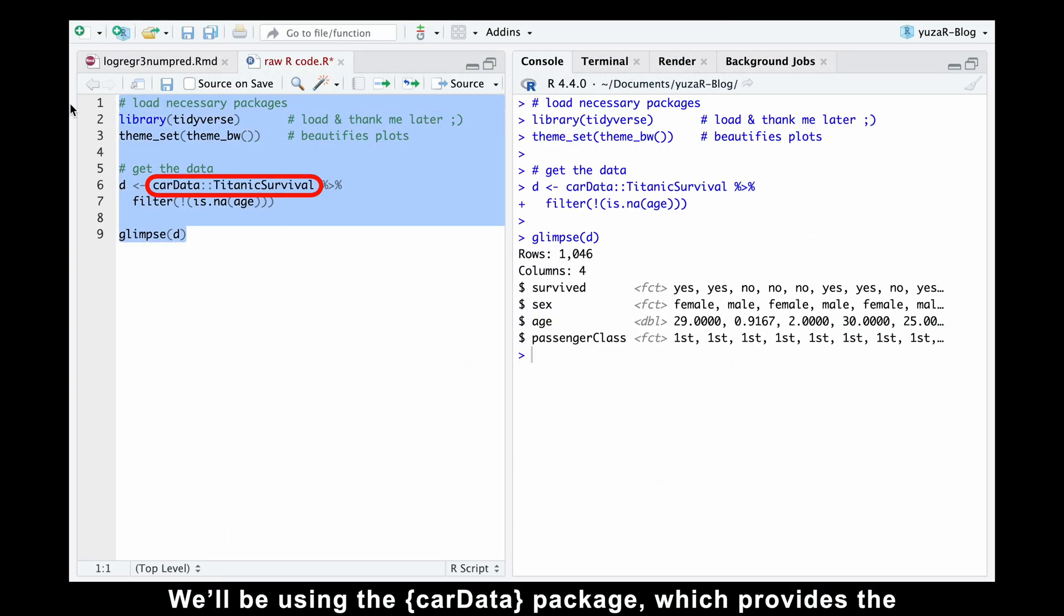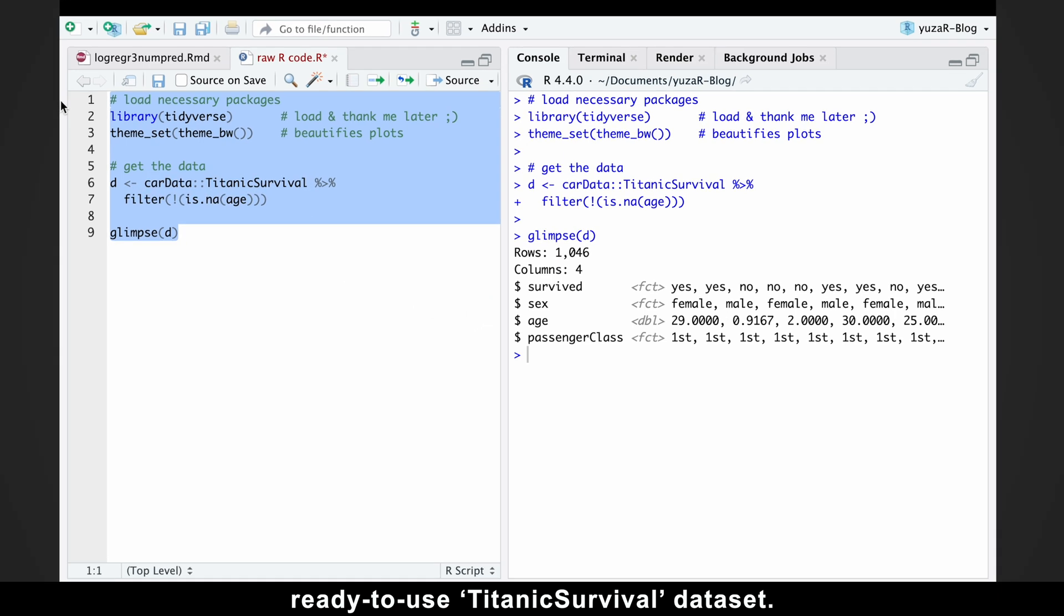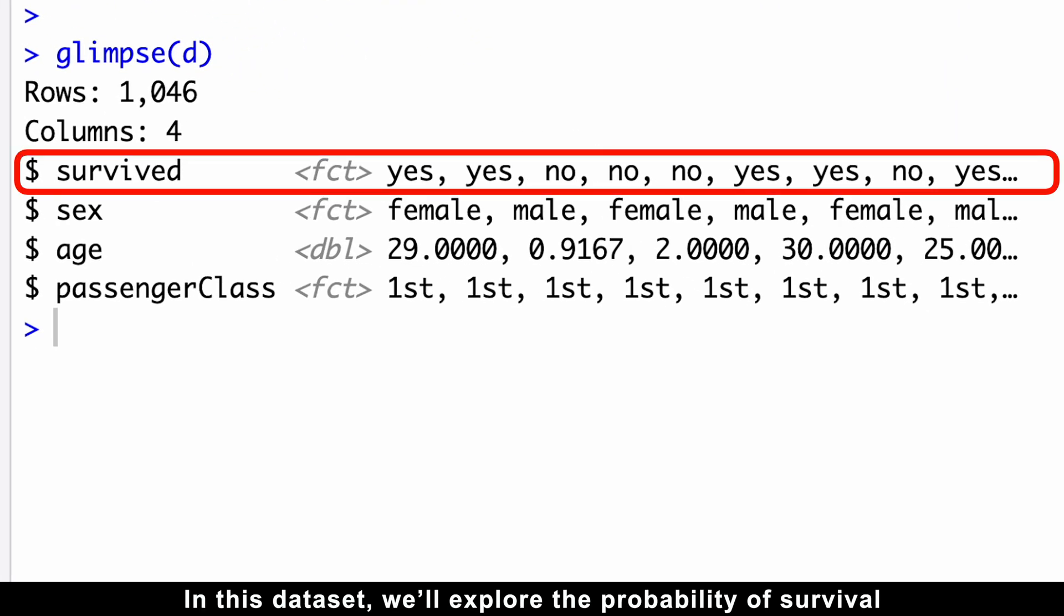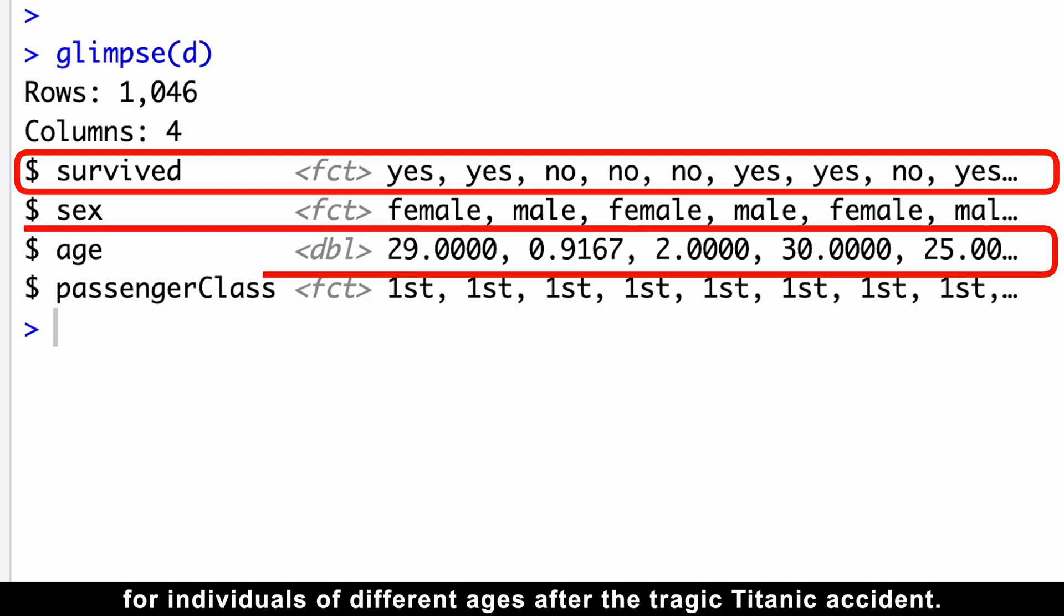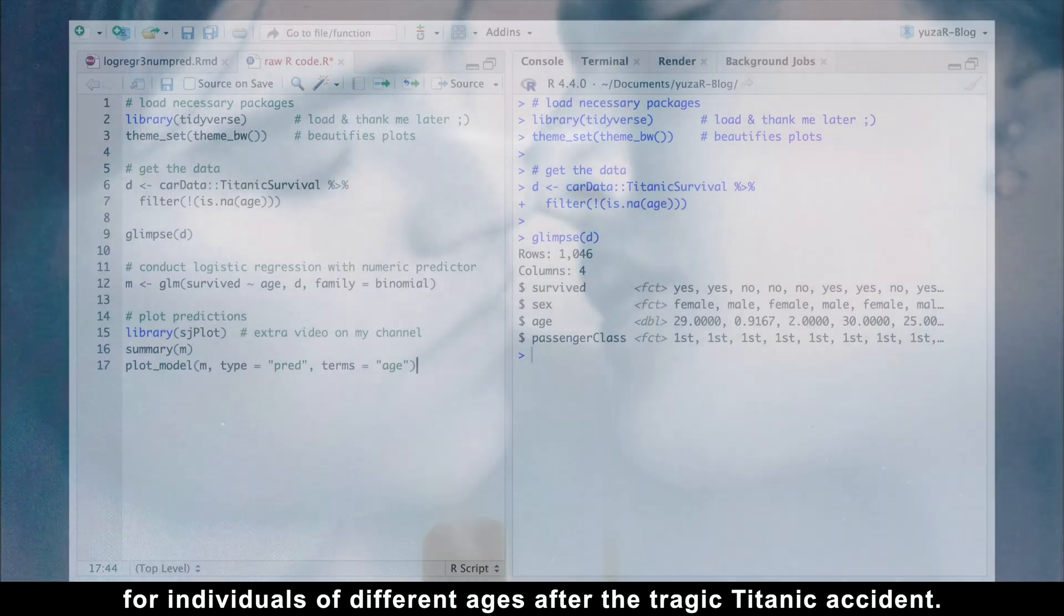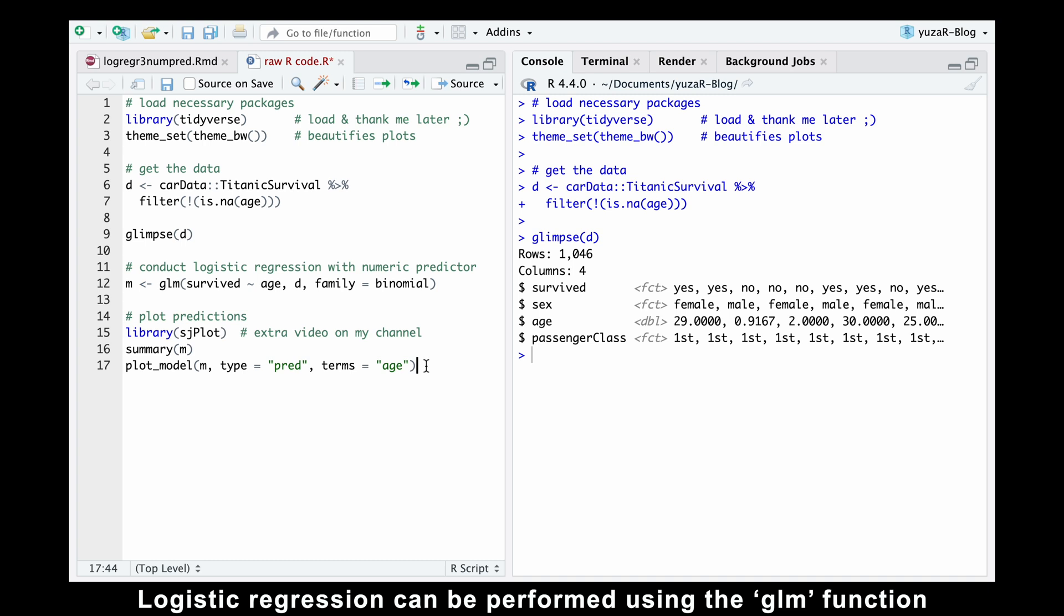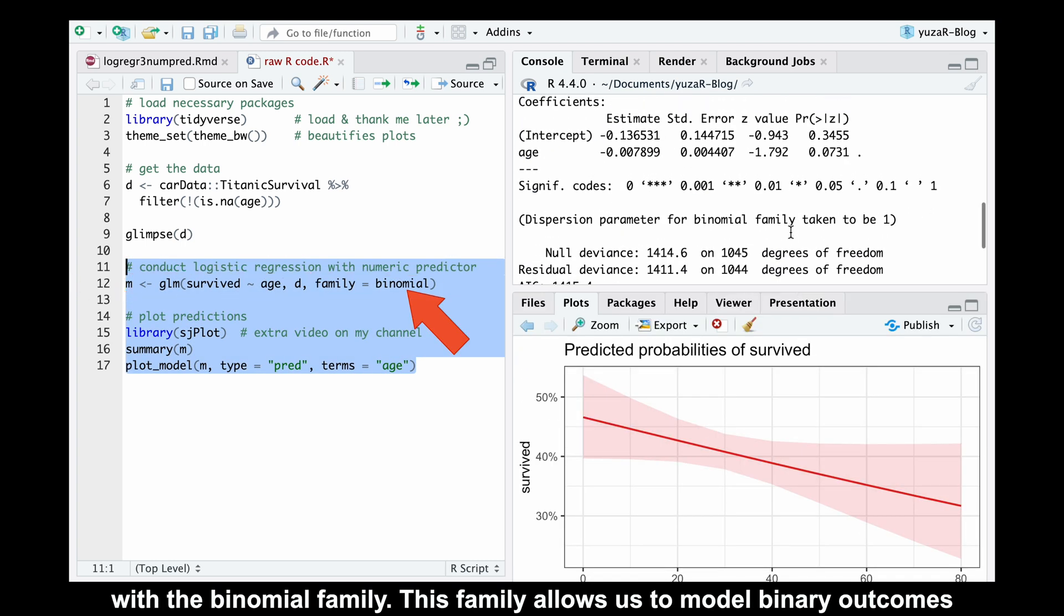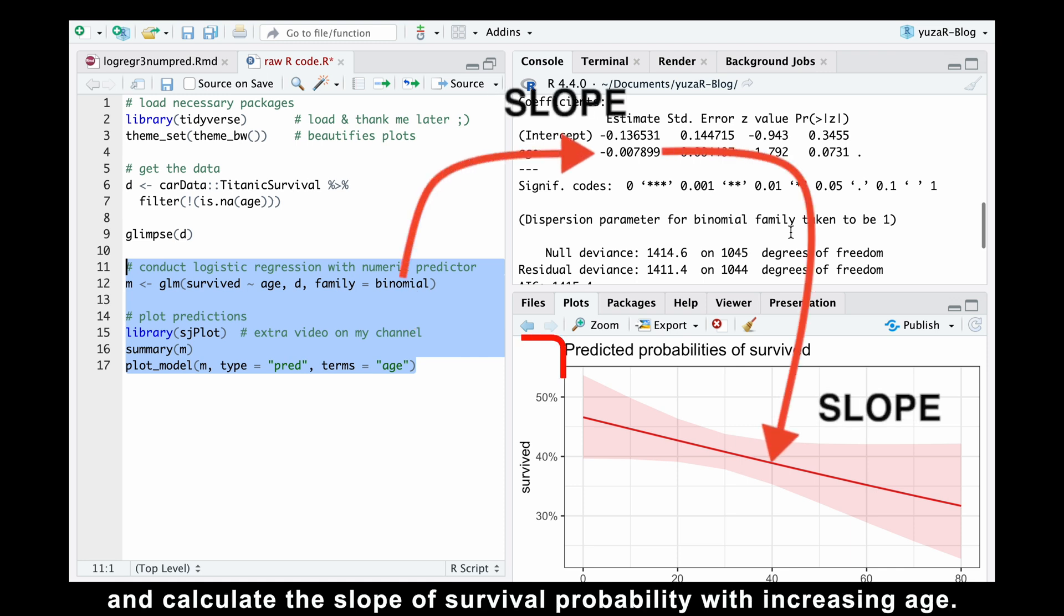We'll be using the CAR data package, which provides the ready-to-use Titanic survival dataset. In this dataset, we'll explore the probability of survival for individuals of different ages after the tragic Titanic accident. Logistic regression can be performed using the GLM function with the binomial family. This family allows us to model binary outcomes and calculate the slope of survival probability with increasing age.